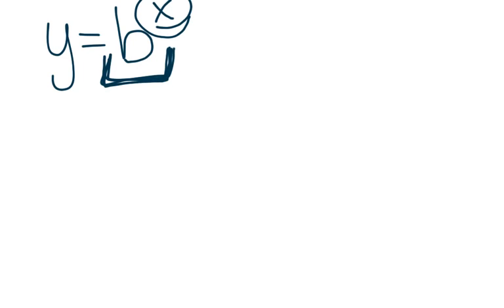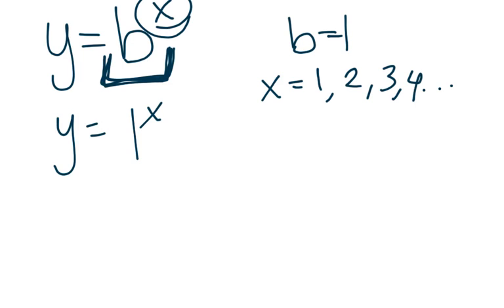Now if that base were just equal to 1, 1 to the x, no matter what x is, if you go 1, 2, 3, 4, up to 1 million or 1,000, there will be no change. 1 to the 1 is 1, 1 to the 2 is 1, this value will always stay the same. So a base of 1 would mean no change is happening in the quantity.